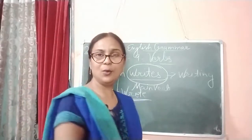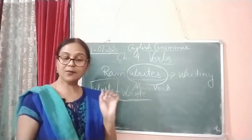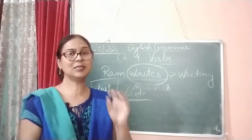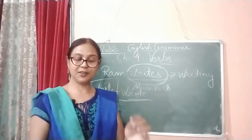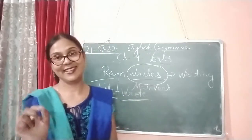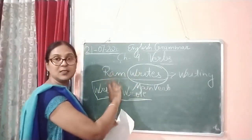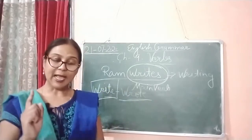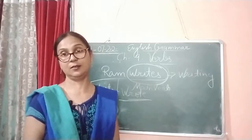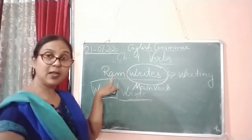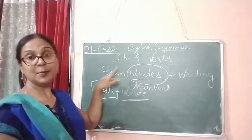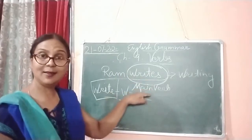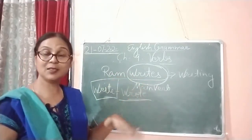Now I am going to give you a brief introduction about main verbs. The main verb is also called the lexical verb or the principal verb. This term refers to the important verb in the sentence — the one that typically shows the action or state of being of the subject. As you can see in 'Ram writes,' this is the important part of the sentence, showing the action and state of the subject. So this is called main verb, principal verb, or lexical verb — all three refer to the same thing.